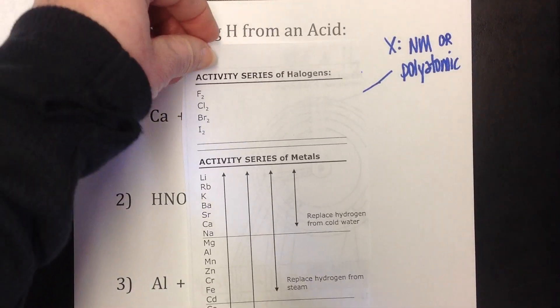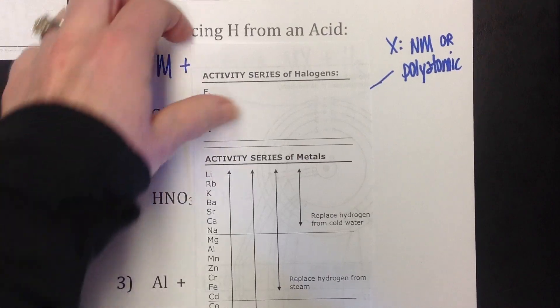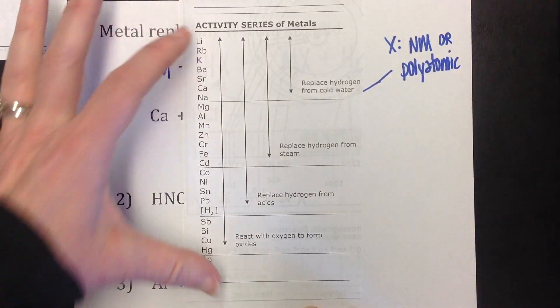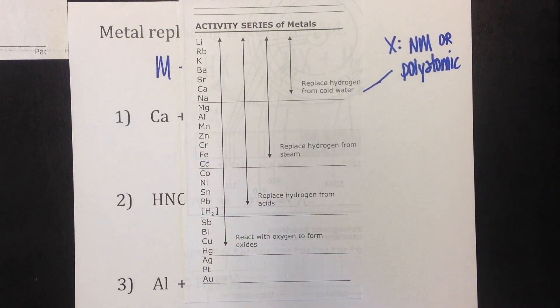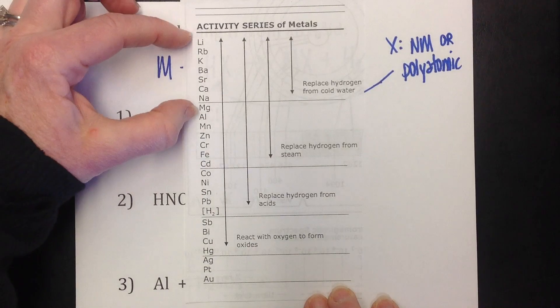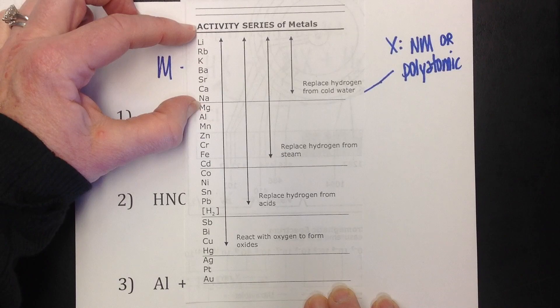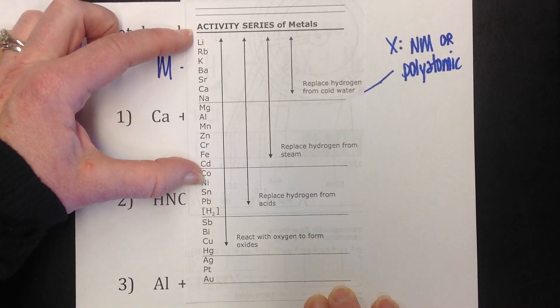And there's also an activity series for the non-metals, or in this case, the halogens. We won't need that for this lesson, but you will need this one, the metal one, because there are some special circumstances written over here on the right. For example, this little group right here, these metals can kick hydrogen out of cold water. This group can kick hydrogen out of steam.